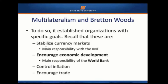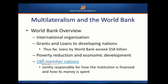Last time we focused on the International Monetary Fund, which was created primarily to bring stability to international currency markets. Another main goal was to encourage economic development, and the institution developed at Bretton Woods for that purpose was the World Bank. The World Bank was created as a result of the Bretton Woods Conference. It's international in scope, and its main function is to make grants and loans to developing countries — close to $60 billion loaned or granted.